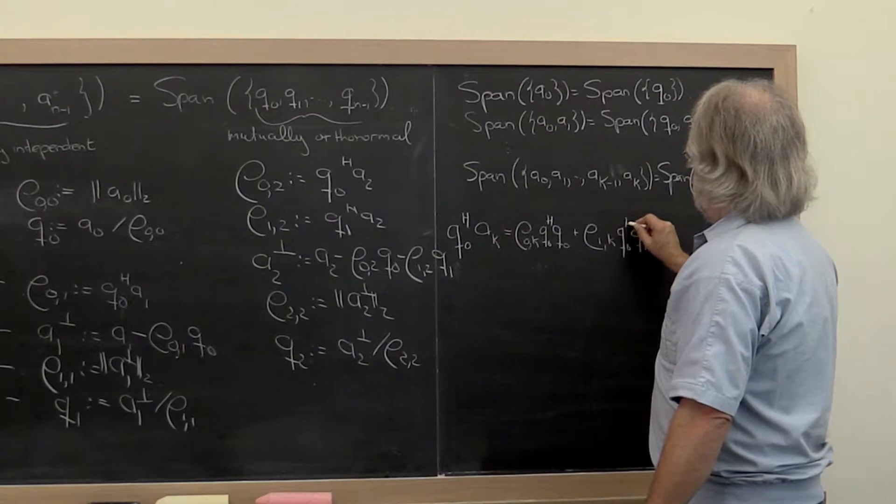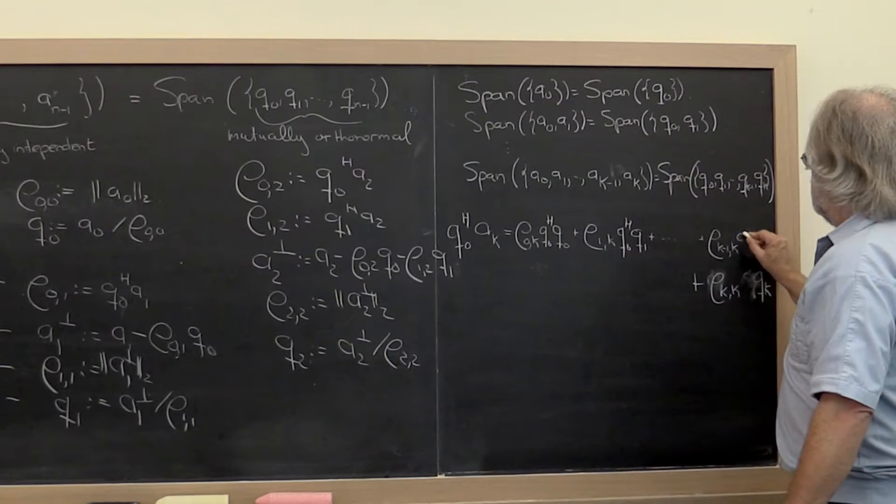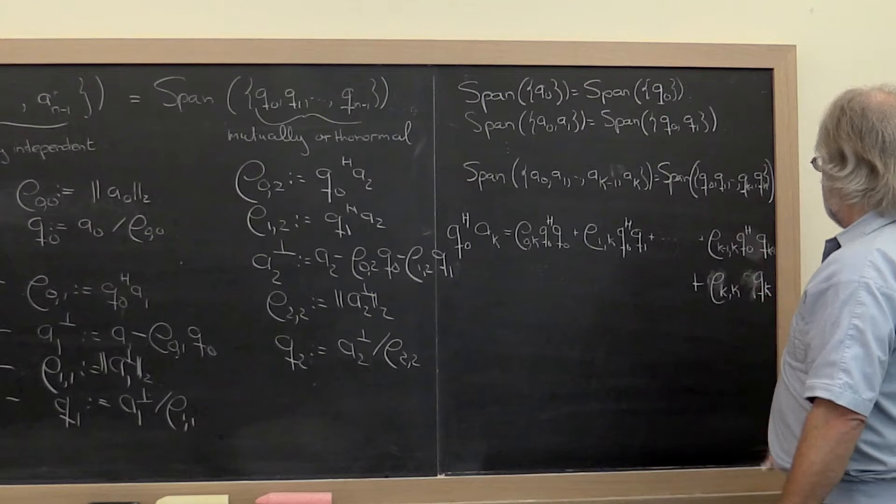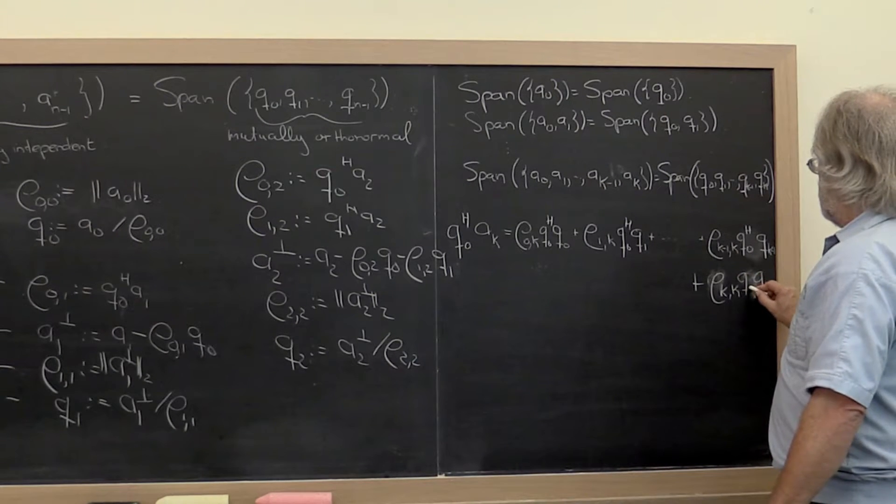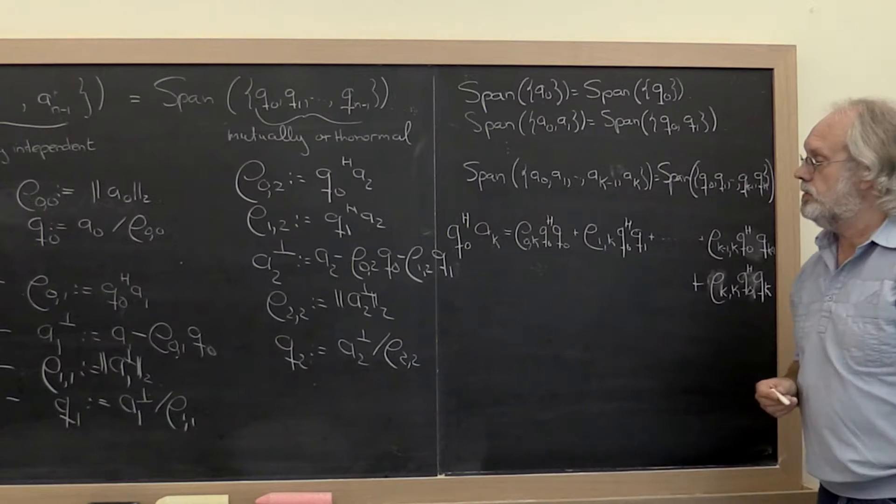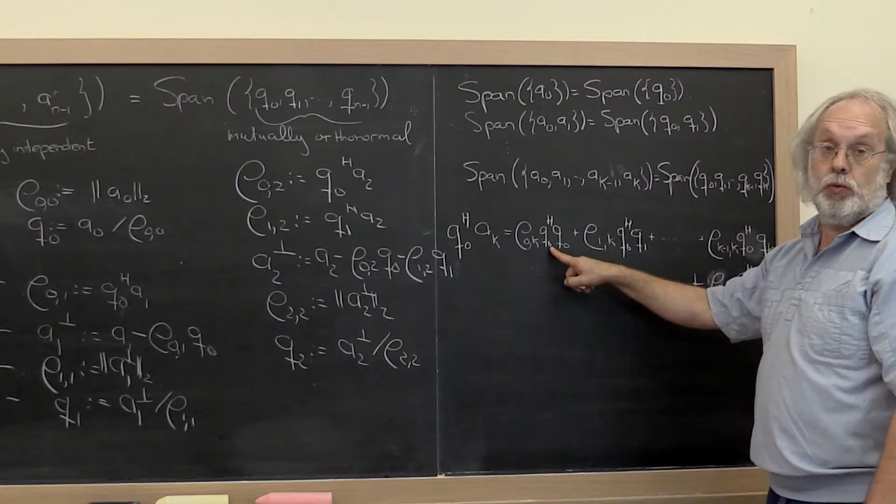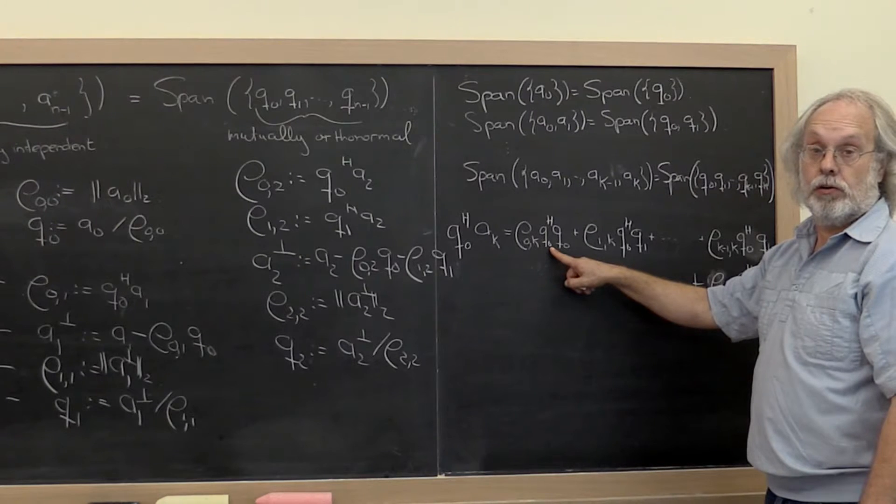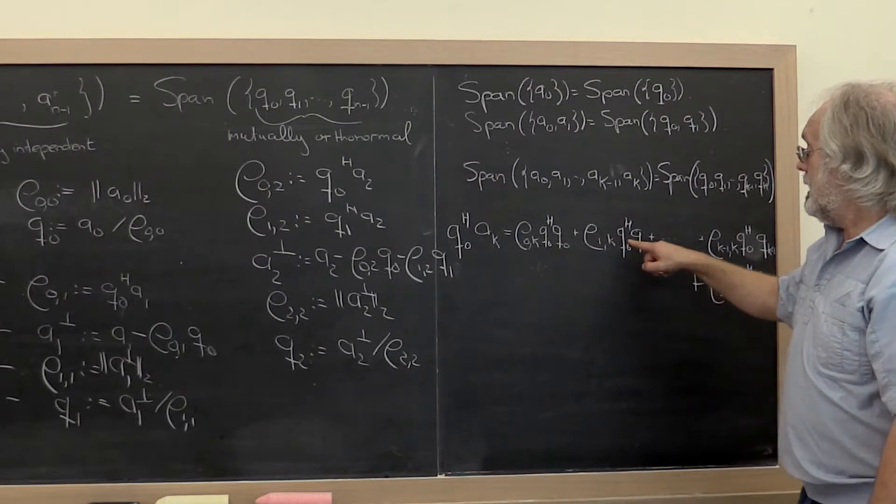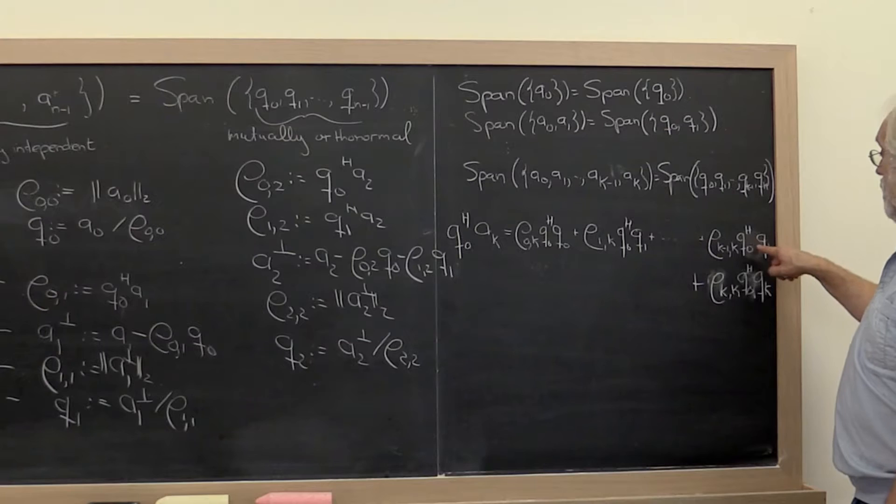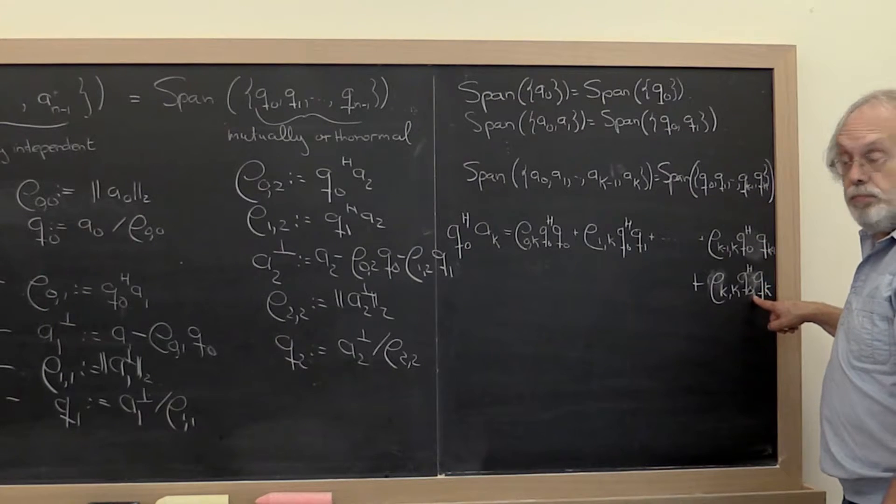Q0 Hermitian transpose here, Q0 Hermitian transpose here, and Q0 Hermitian transpose here. What I find is that this is equal to 1 because these vectors are mutually orthonormal. And all of these dot products are equal to 0, so they disappear.